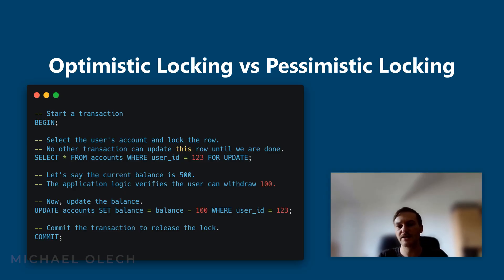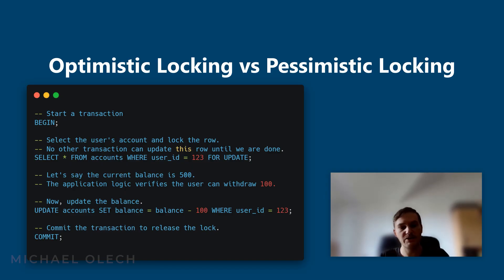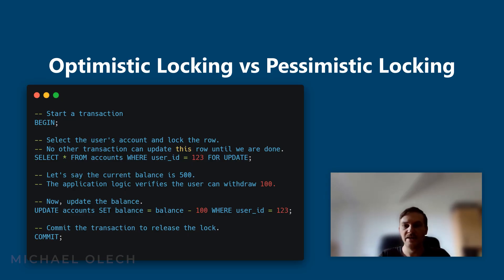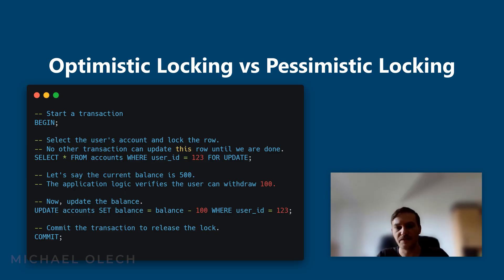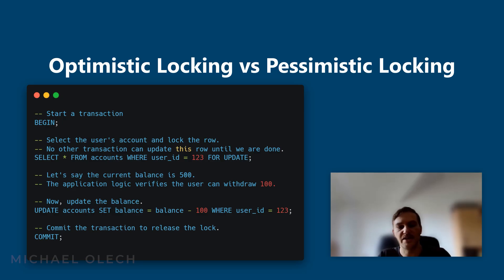In our example, when you select rows with FOR UPDATE, PostgreSQL locks them. Other transactions that try to update, delete, or select for update those same rows will be blocked until your transaction completes. Use pessimistic locking when contention for data is high and the cost of a transaction failing is significant. It is simpler for the database to manage, but it can limit scalability if used excessively.